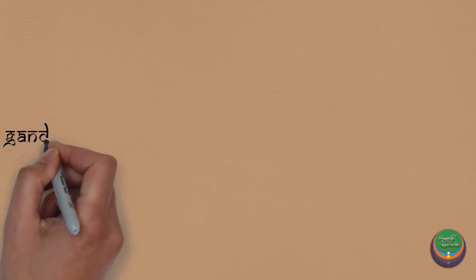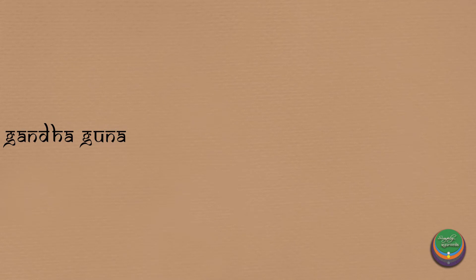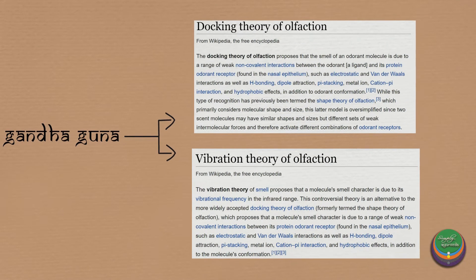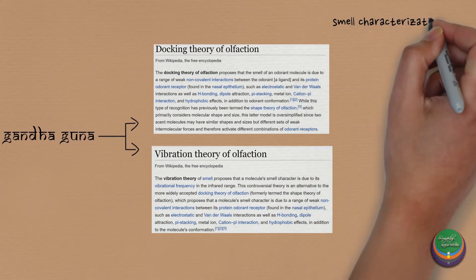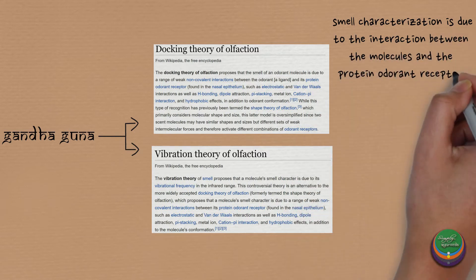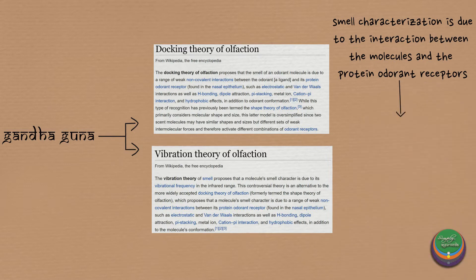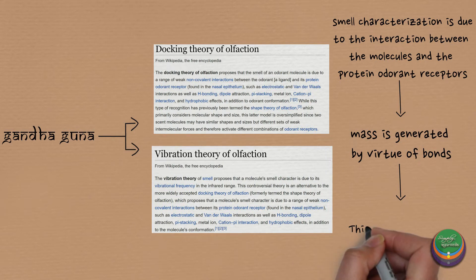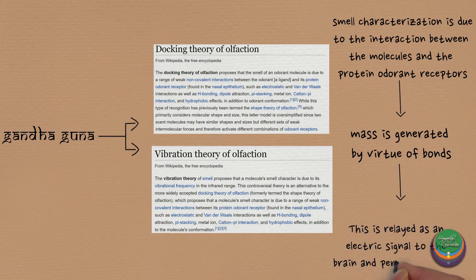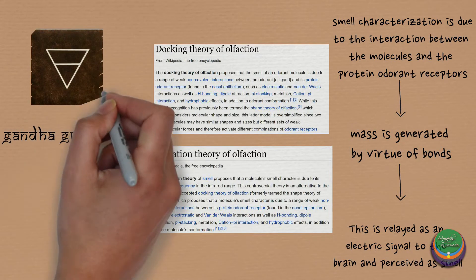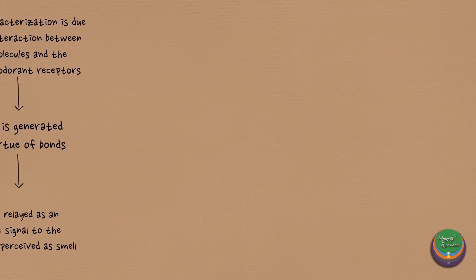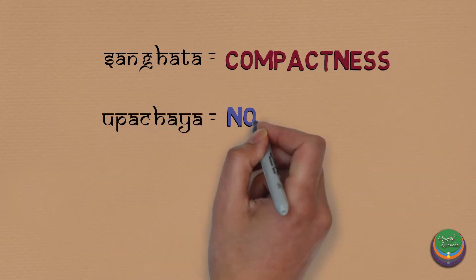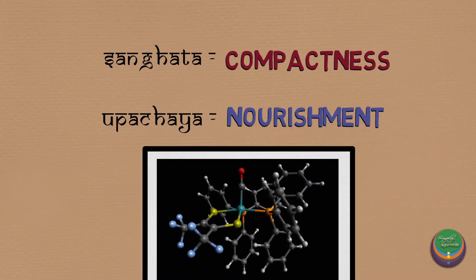Gandha Guna is the cardinal attribute of Prithvi Mahabhuta. There are two widely accepted mechanisms for smell perception: the vibrational theory and the docking theory. The fundamental approach is that smell characterization is due to the interaction between molecules and the protein order and receptors present in the nasal epithelium. Mass is generated by virtue of bonds, and this mass carrying data about the substance is relayed as an electric signal to the brain and perceived as smell. Hence, Prithvi Mahabhuta is responsible for Gandha Grahana. The other two karmas of Prithvi Mahabhuta are Sanghata, representing compactness, and Upachaya, representing accumulation or nourishment.